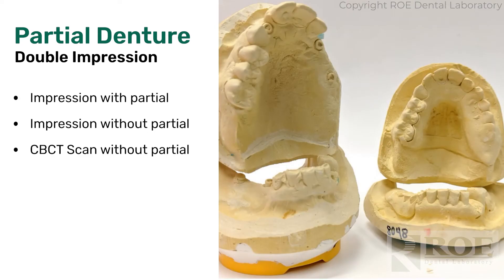If the patient has a partial on the dentate arch, then take two impressions — one with the partial seated and one with the partial not seated. When you take the CT scan, capture the scan with the partial out, or if there's no metal on the partial, you can also scan it in the mouth seated.